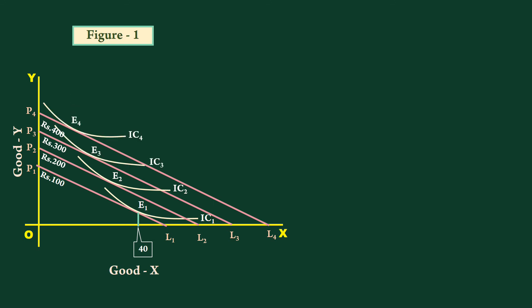The curve joining these points is income consumption curve. At each equilibrium point E2, E3 and E4 we can find the quantity by moving down to the x axis. They are 35, 30 and 20 units. We have income and quantity pairs of data.